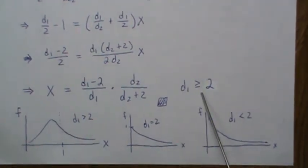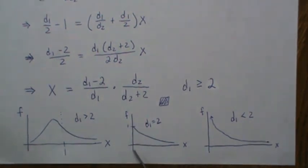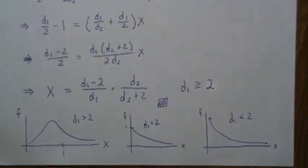When the numerator degrees of freedom equals two, it's this. So it touches that point right there at one. So X equals one, or X equals zero is the mode.